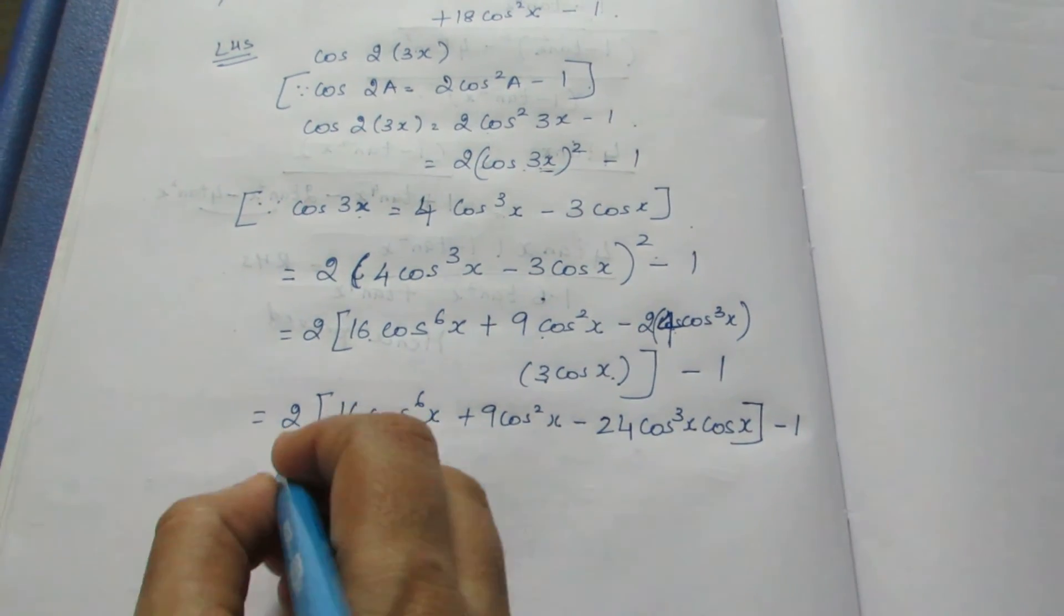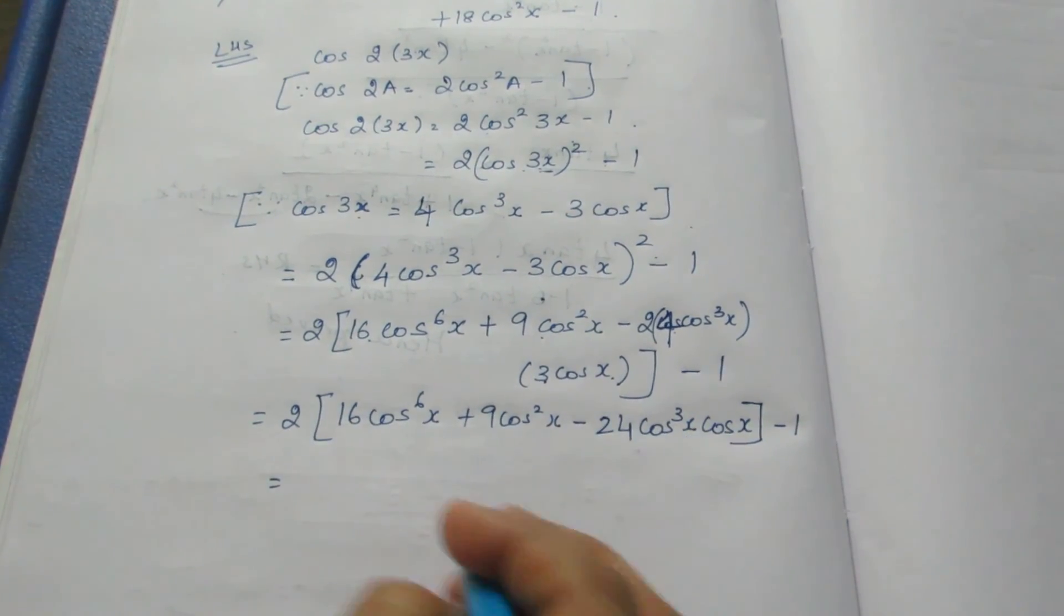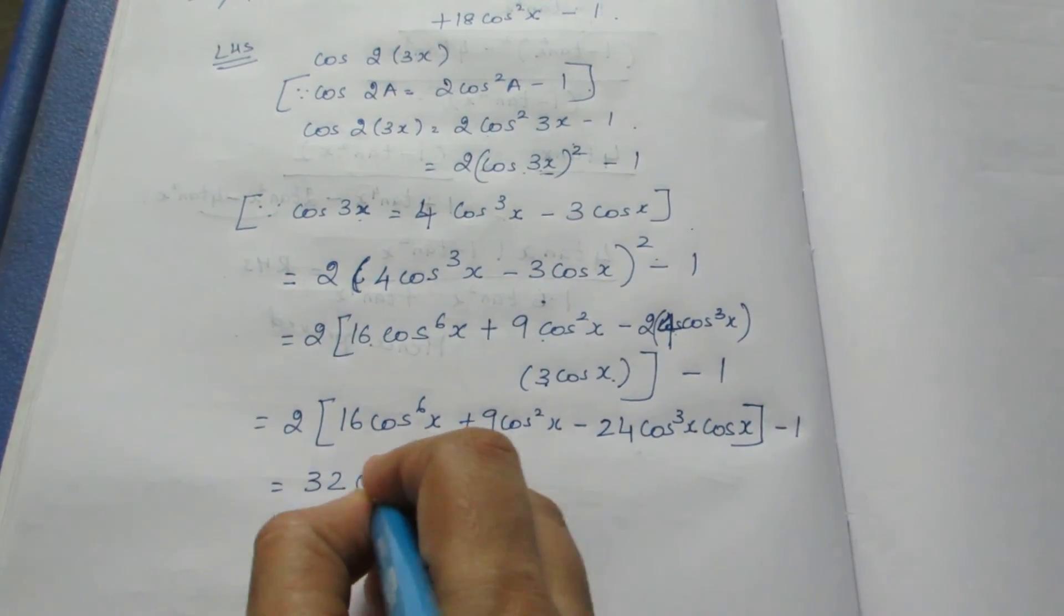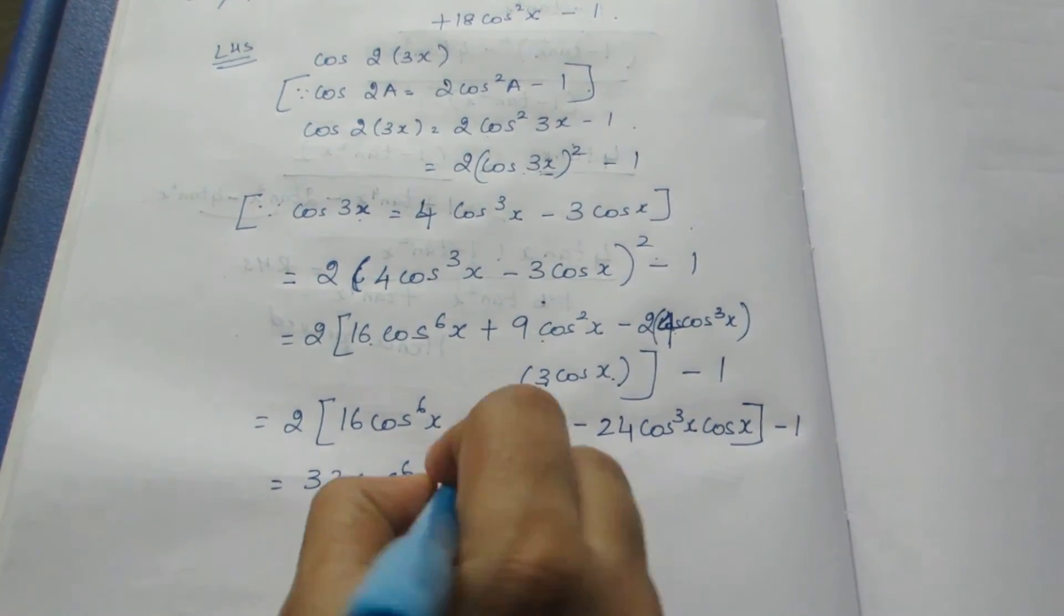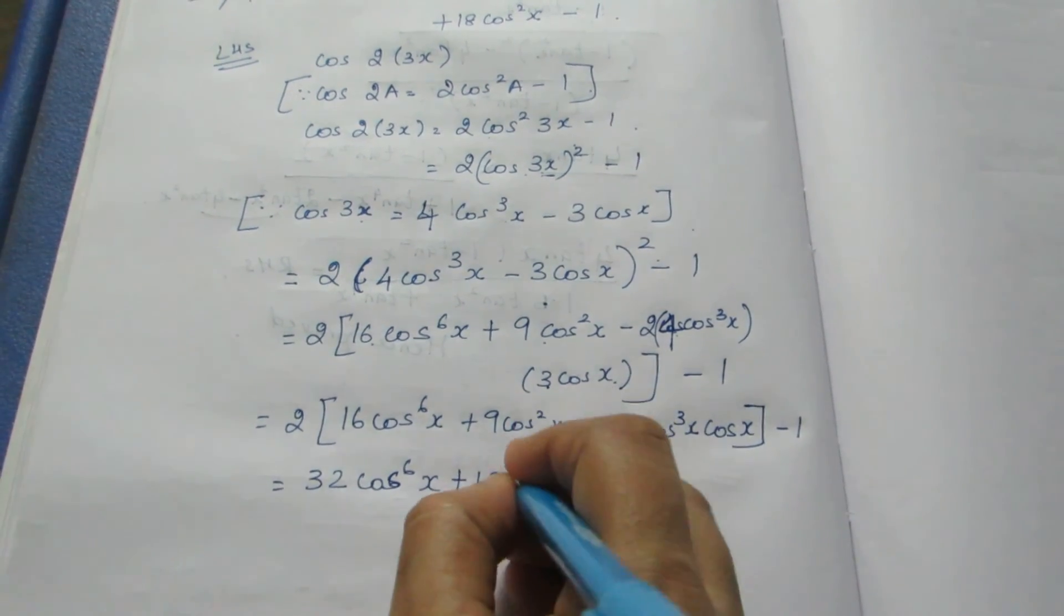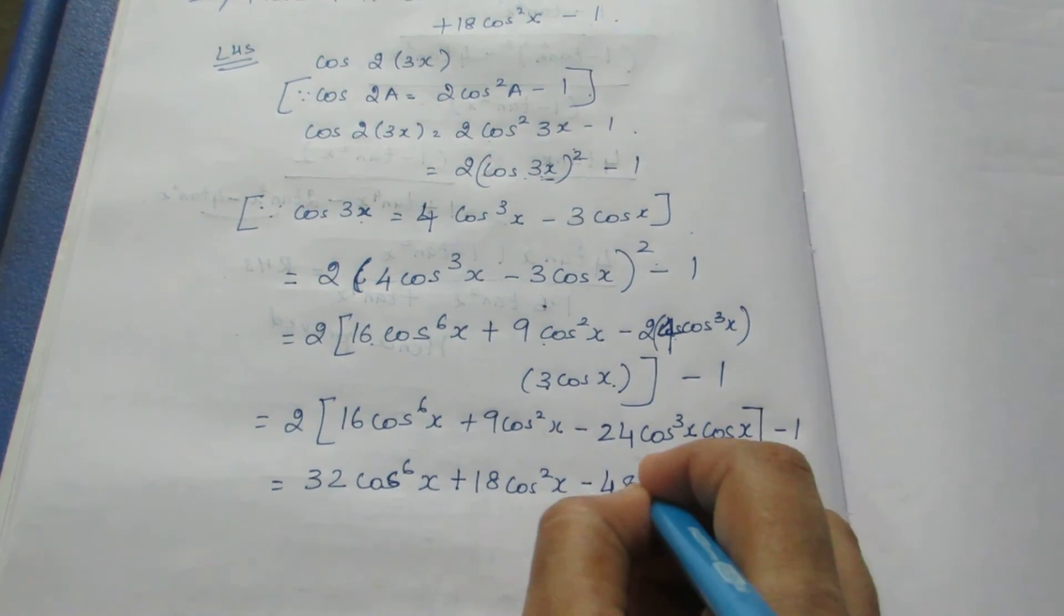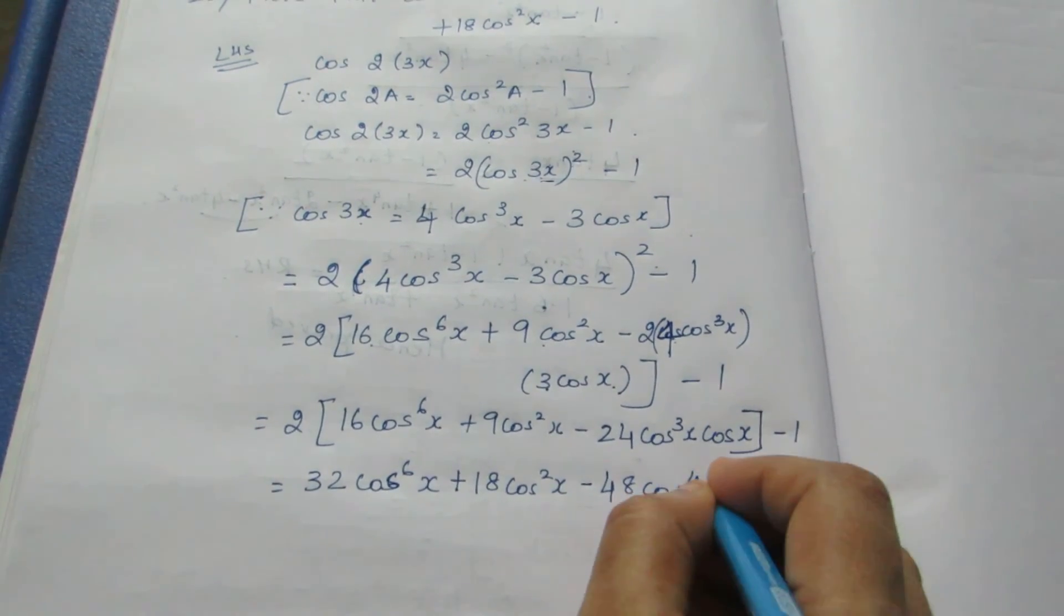I am going to multiply the 2 inside. If I multiply 2 with everything, it becomes 32 cos⁶x, 18 cos²x, 48 cos⁴x, minus 1.